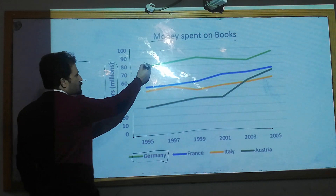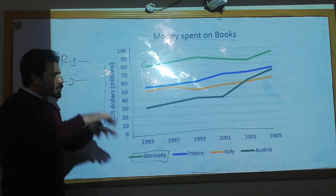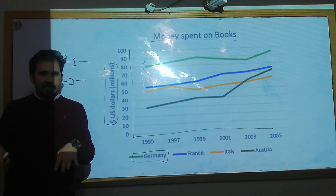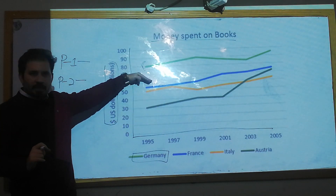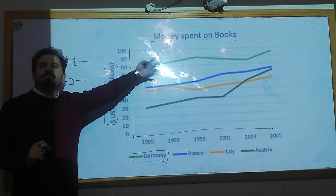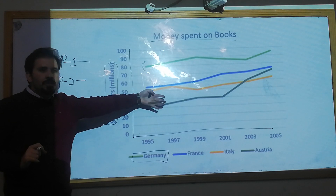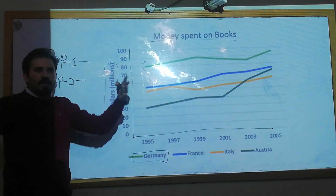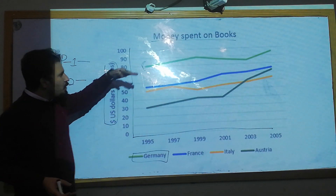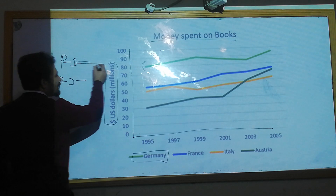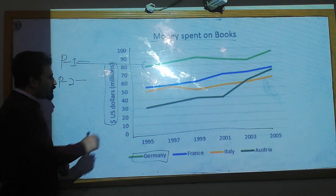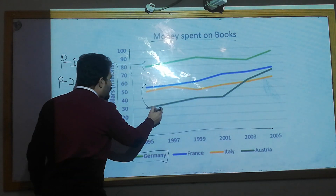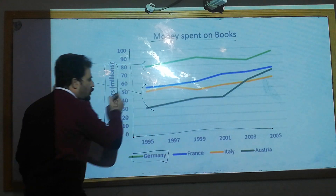Looking at the graph logically, Germany shows the most changes, so I can write more words about Germany. I want to write one paragraph separately on Germany and put the other three countries — France, Austria, and Italy — in the second paragraph.